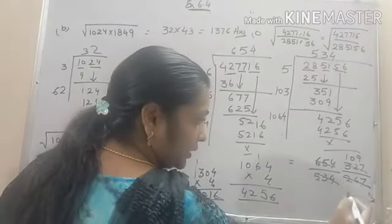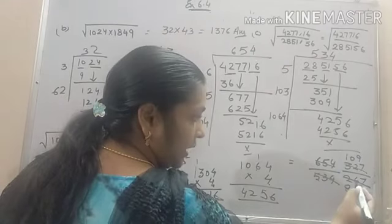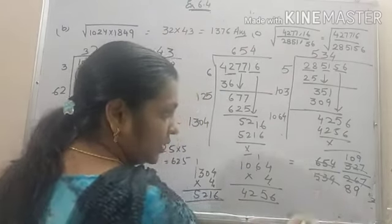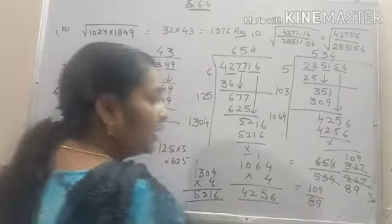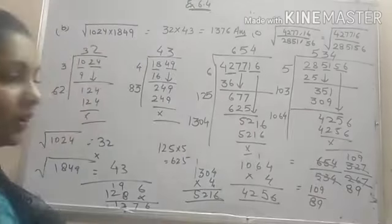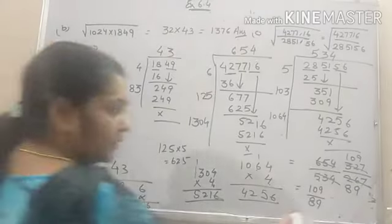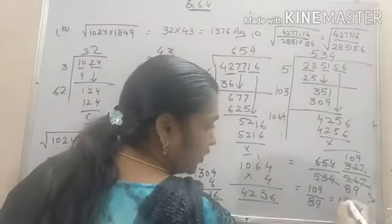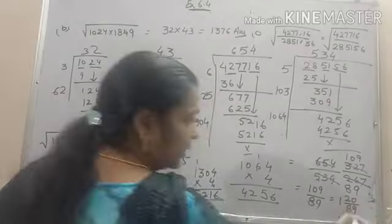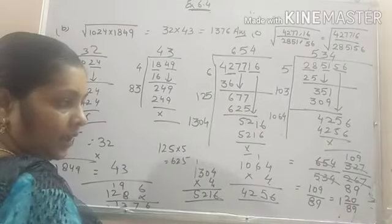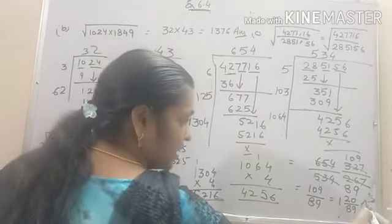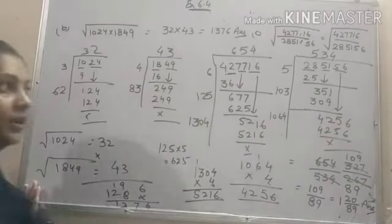109. And here it will be 89. Now I think they are not divisible by any number. If you want you can convert it into mixed fraction. It will be equal to 120 by 89. This is our answer. Is that clear?